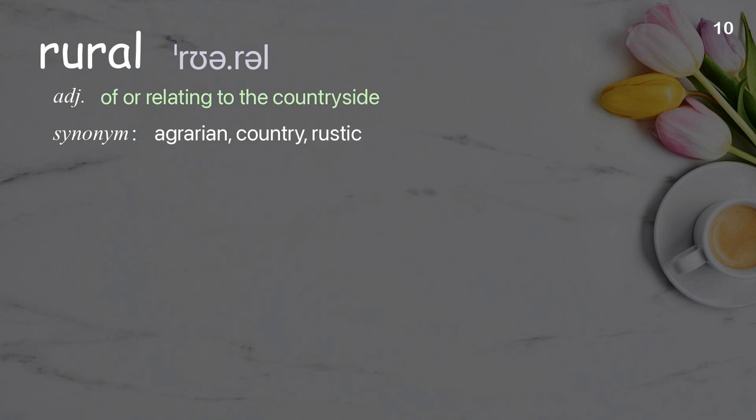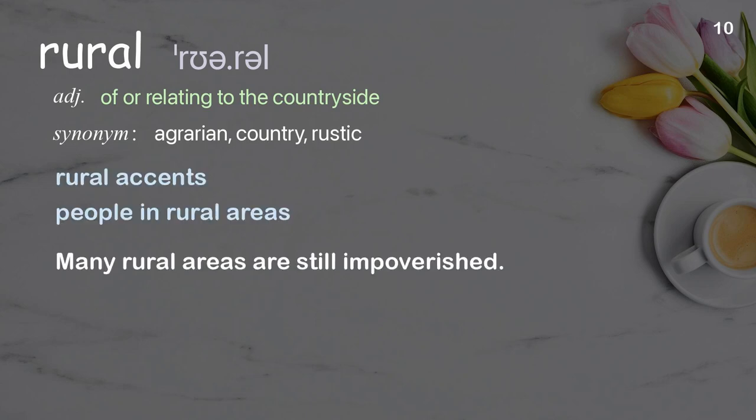Rural: of or relating to the countryside. Examples: rural accents, people in rural areas. Many rural areas are still impoverished.